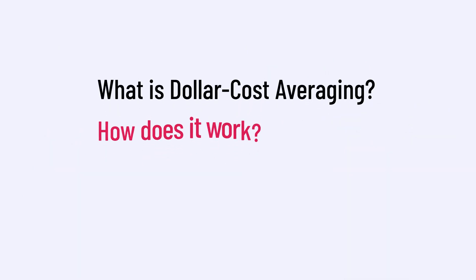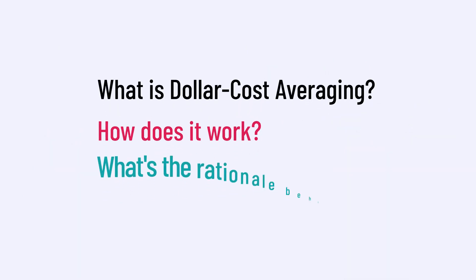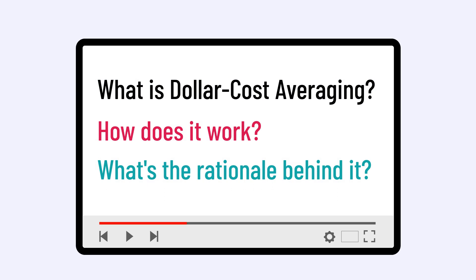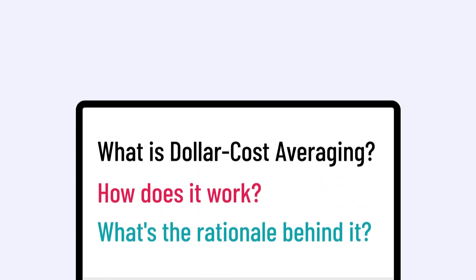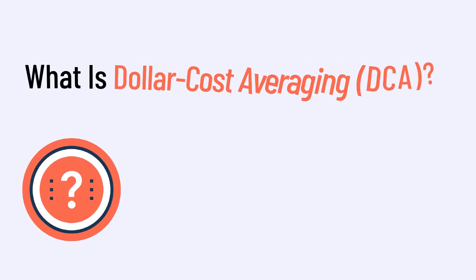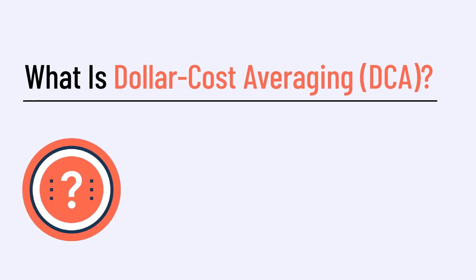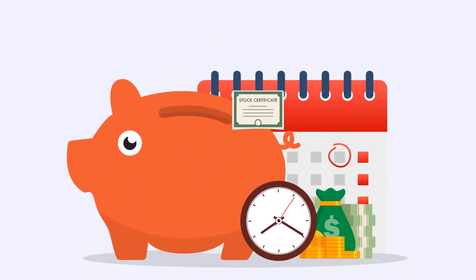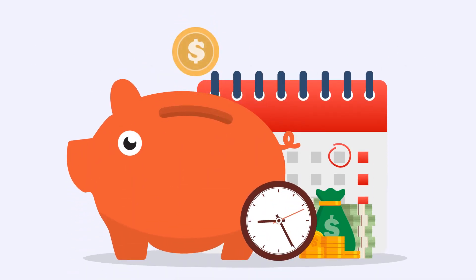What is dollar cost averaging, how does it work, and what's the rationale behind it? Keep watching to find out. Dollar cost averaging, or DCA, is an investment strategy in which an investor divides up the total amount to be invested across periodic purchases of a target asset.